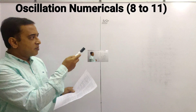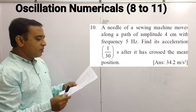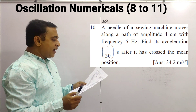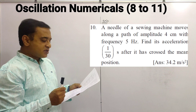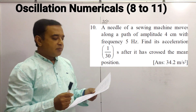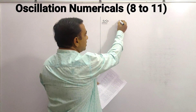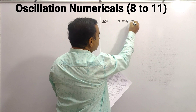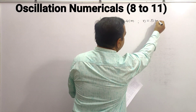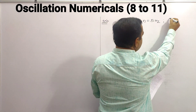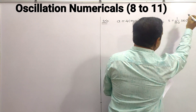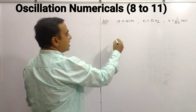Here is problem number 10. A needle of a sewing machine moves along a path of amplitude 4 centimeter with a frequency of 5 hertz. Find its acceleration 1/30 second after it crosses the mean position. Given: amplitude a = 4 centimeter, frequency n = 5 hertz, time t = 1/30 second.